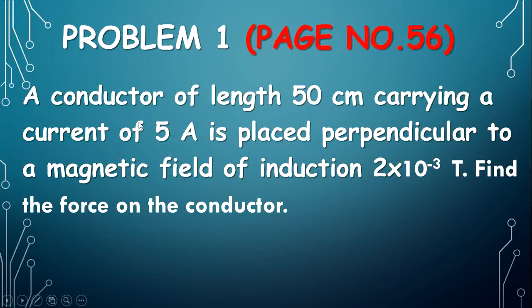The current passing through the wire is 5 Ampere and the magnetic field induction is 2 into 10 power minus 3 Tesla. The phenomenon of producing an induced EMF due to change in the magnetic flux linked with a closed circuit is called magnetic field induction or electromagnetic induction.